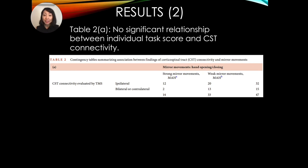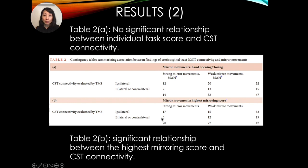We then went on to examine the relationship between mirror movements and the underlying corticospinal tract connectivity. From Table 2a, we did not find any significant relationship between the individual test score and the underlying corticospinal tract connectivity. However, when we used the highest mirroring score as our dependent variable, we found a significant relationship between the corticospinal tract connectivity and the highest mirroring score.